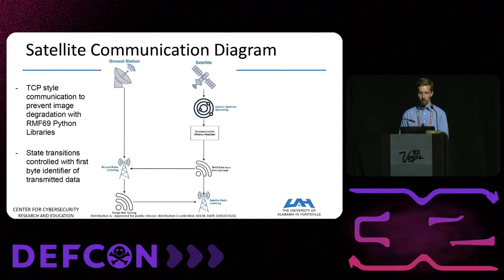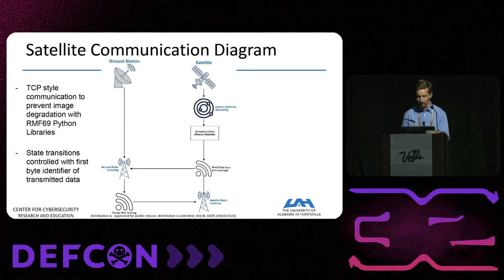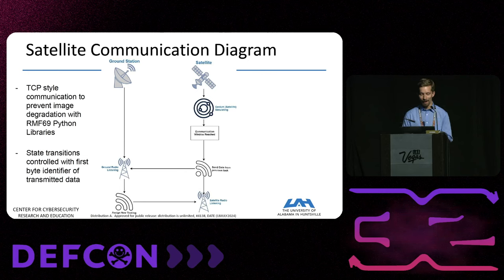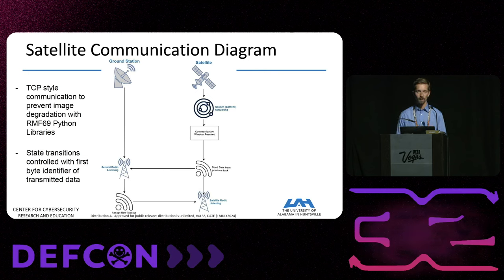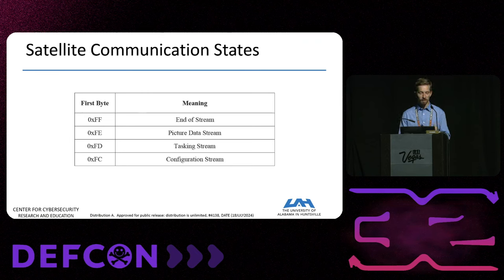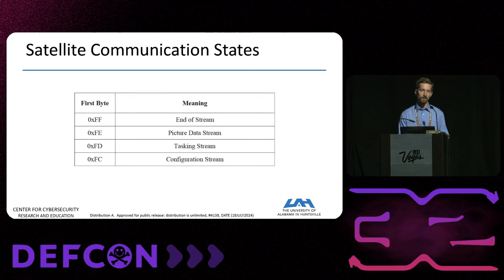For communication we set up a TCP-style link between the ground station and satellite. The satellite interfaced with Cesium to simulate the orbit window, and when in the communication window it would send data to the ground station based on previous tasking, then listen for additional tasking. We used the first byte of transmitted data as an identifier to control satellite states, with various bytes indicating end of stream, start of a picture stream, task commands, or satellite configuration.